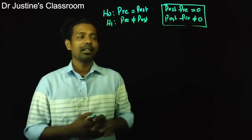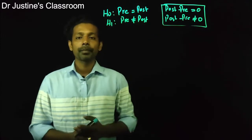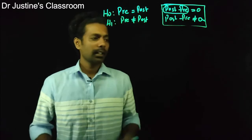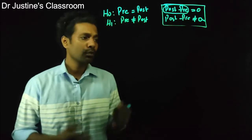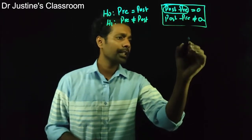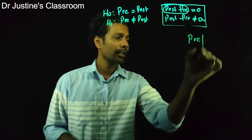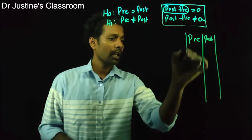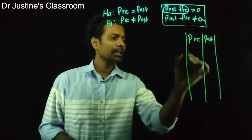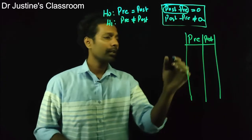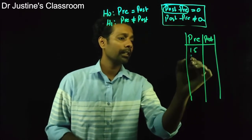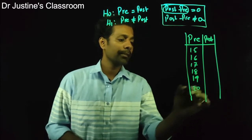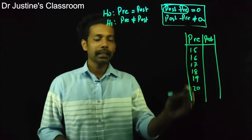You may remember a similar condition when we did the one sample t-test — it's almost like a one sample t-test itself. Let us imagine some scores. You have a pre-test condition and a post-test condition. I'm just going to randomly write some values here. The pre-test happiness scores are: 15, 16, 17, 18, 19, 20.